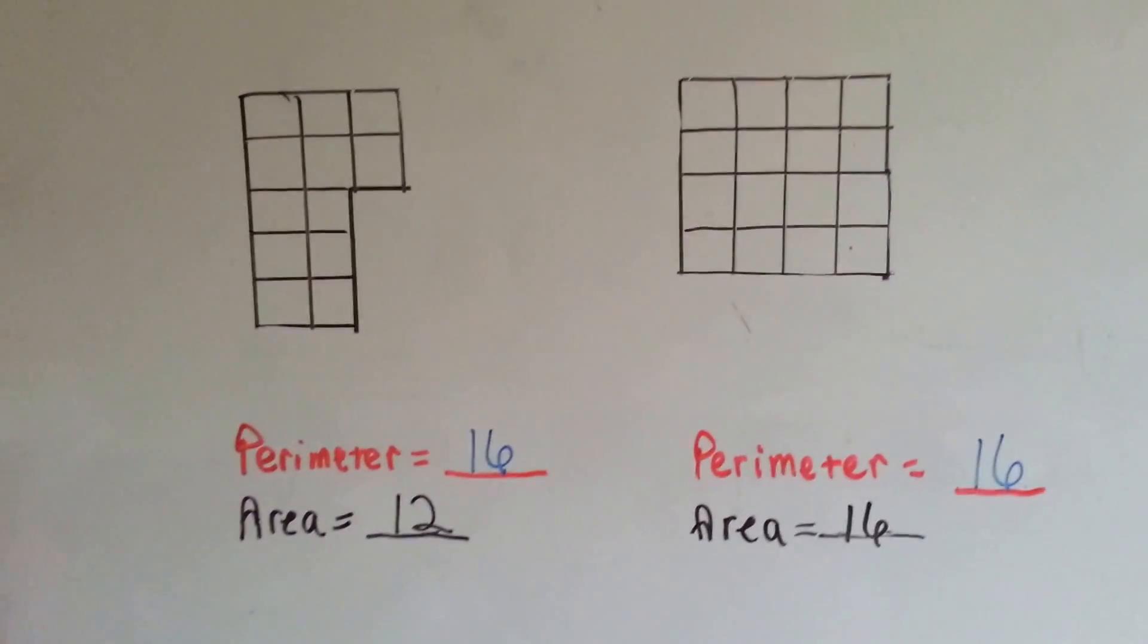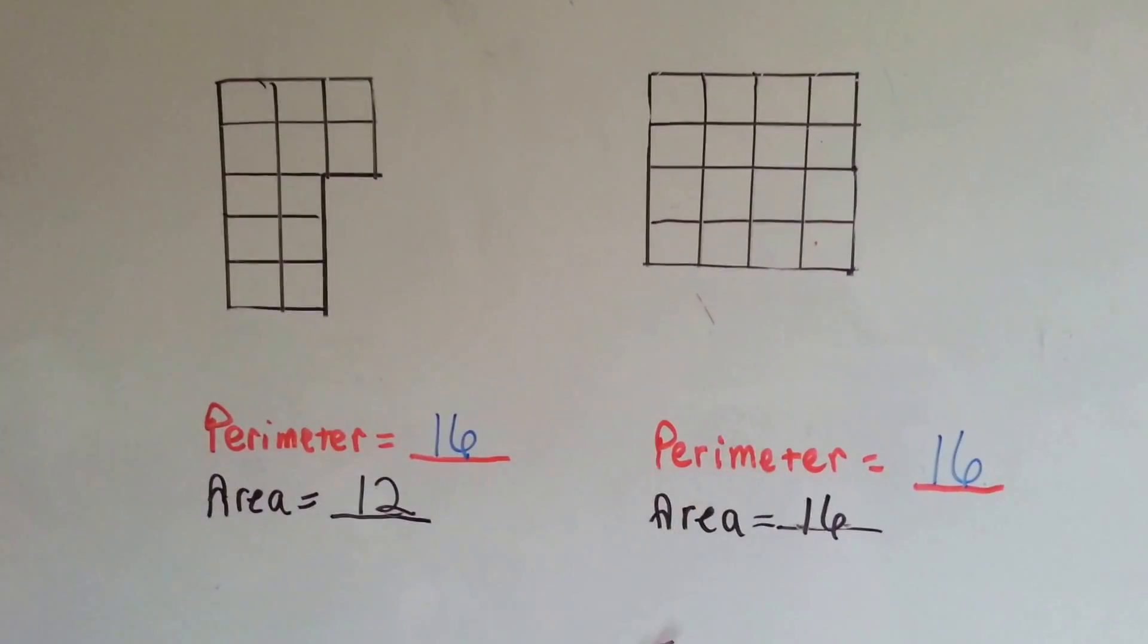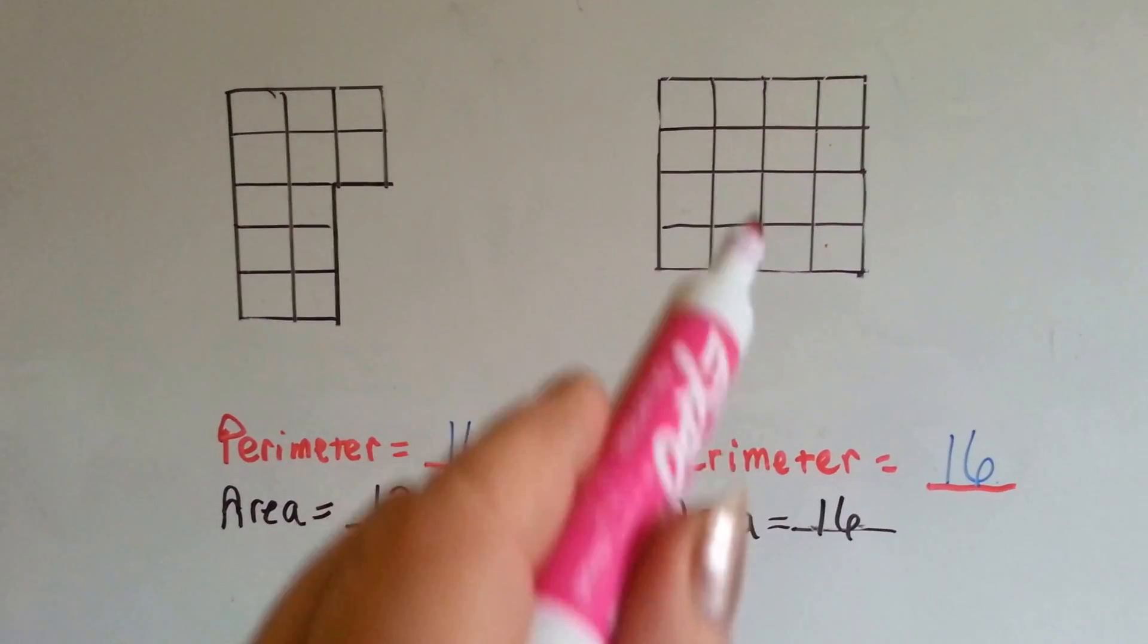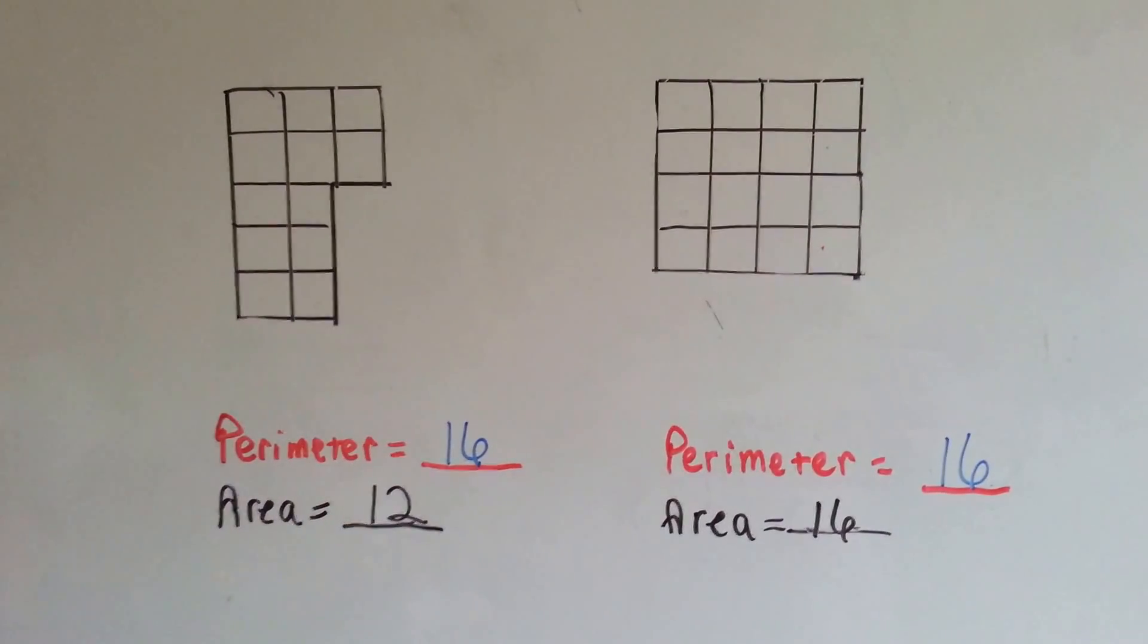Look at these two. They both have a perimeter of 16, but the area of this one is 12 and the area of this one is 16, the same as its perimeter. Let's check it out.